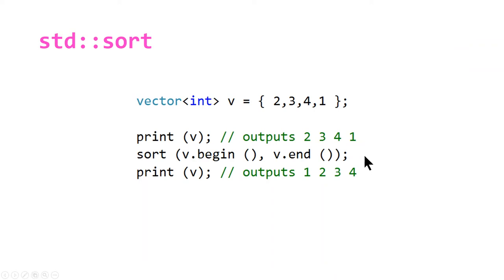If we sort our vector by passing the begin iterator and the past-the-end element iterator, it'll sort our vector. Then if we call print again, it'll output 1, 2, 3, 4. So most of you have probably seen this, nothing fancy going on here.